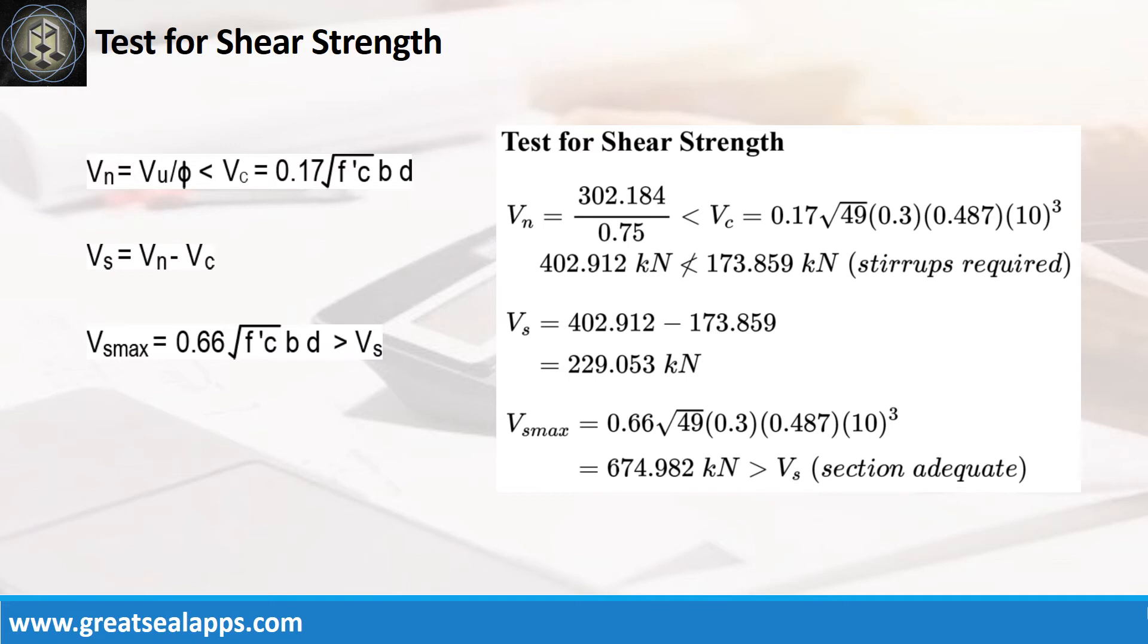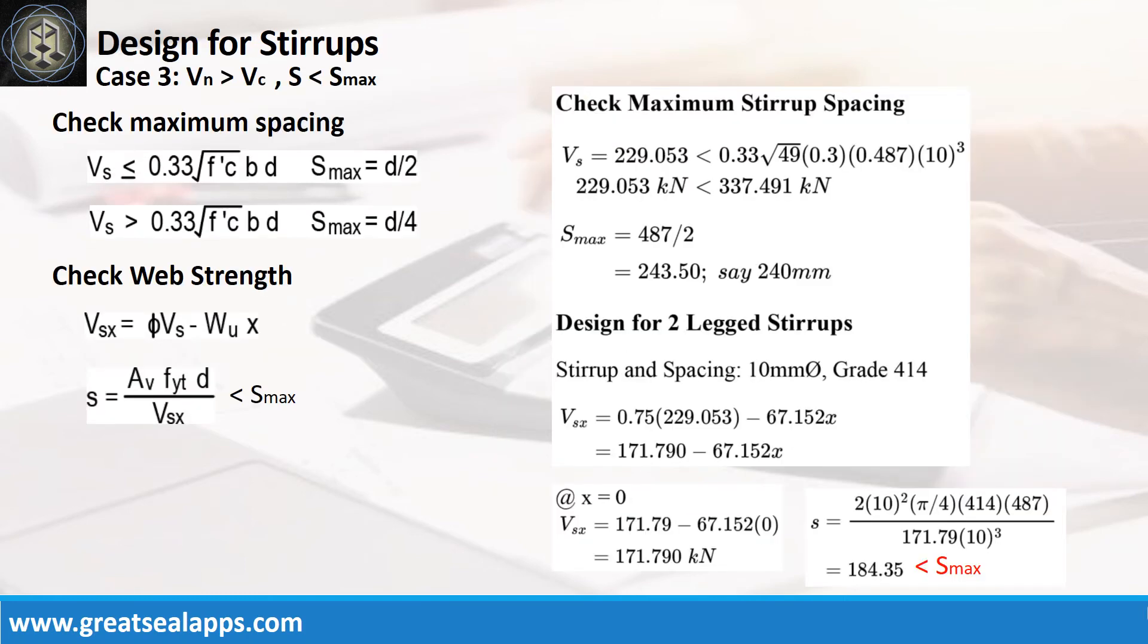Additional shear capacity from stirrup is 229.053 kN, less than 674.982 kN maximum stirrup capacity. The maximum stirrup spacing is 240 mm. The web strength at face of support is 171.79 kN, with initial spacing at 184.35 mm, less than 240 mm.